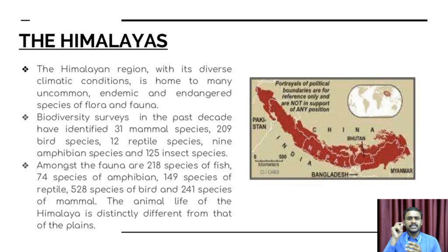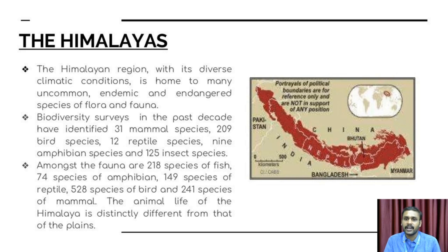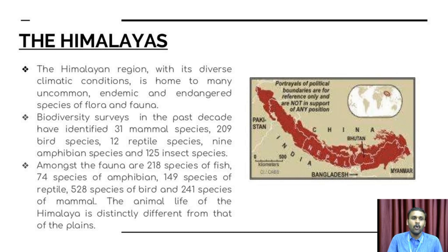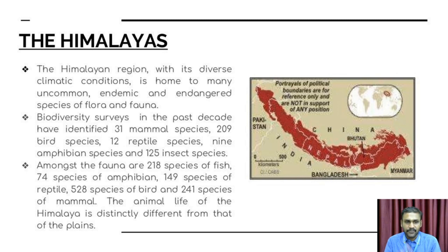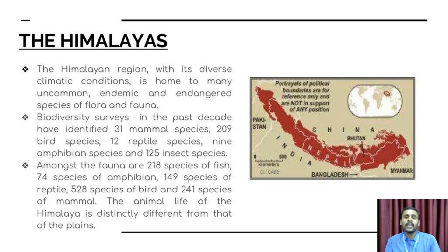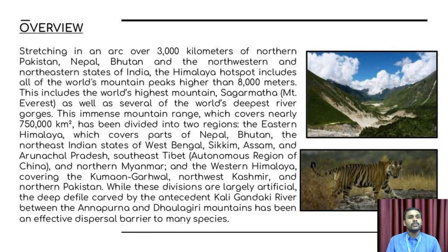The Himalayan region, with its diverse climate conditions and chilly environment, is home to many uncommon, endemic, and endangered species of flora and fauna. Biodiversity surveys over the past decade have identified 31% of mammal species, 209 bird species, 9 amphibian species out of 125, 35 species of fish, and 149 species of reptiles.